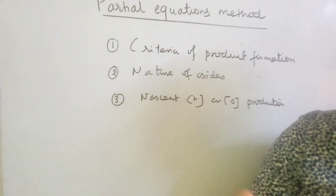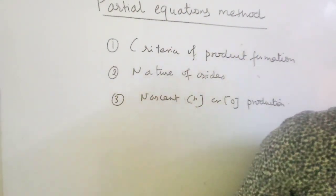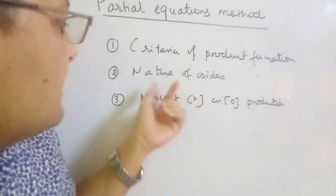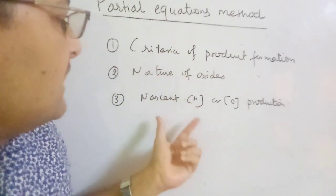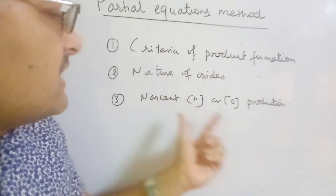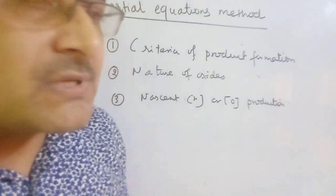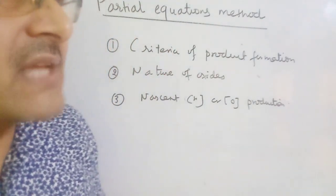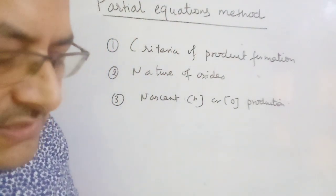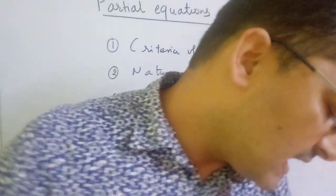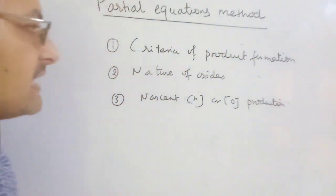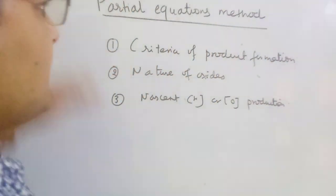So before attempting the partial equation method, you must know about these three different things: what are the criteria of product formation, which products are partially formed during the reaction, the nature of the oxide, and whether nascent hydrogen or nascent oxygen is produced. If you know these three things, you can easily balance the reaction by partial equations method.